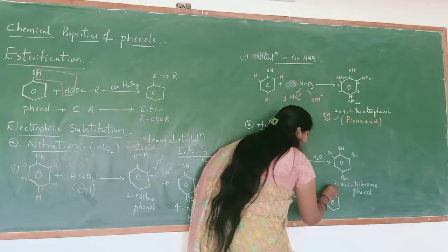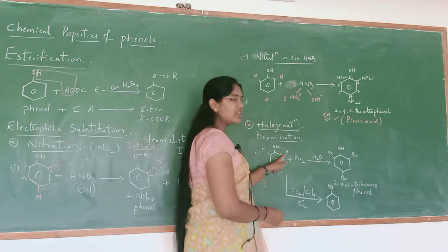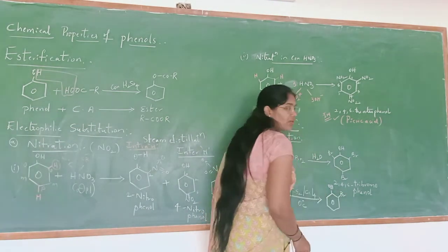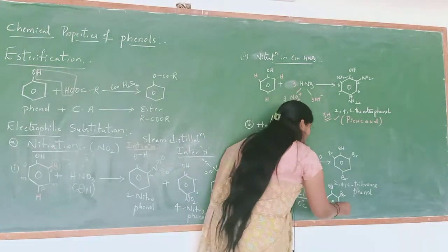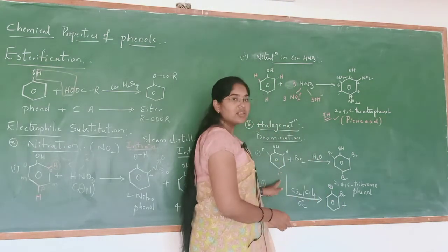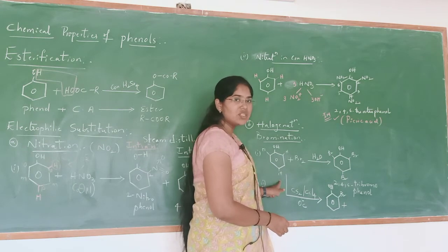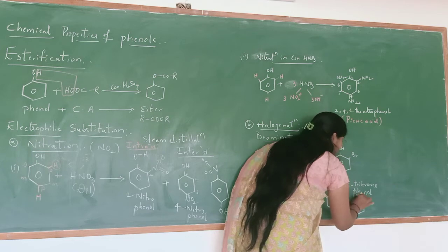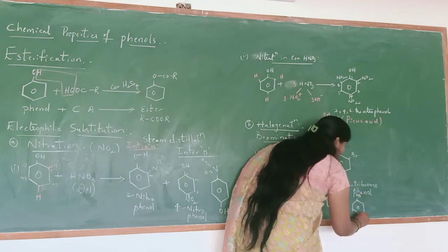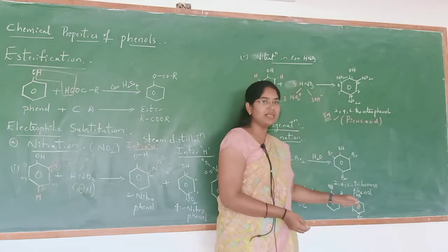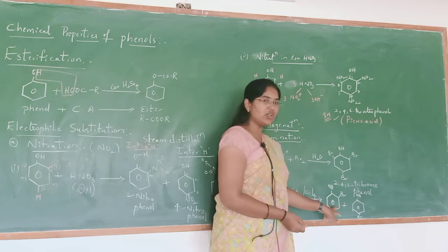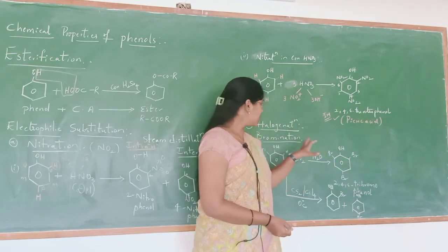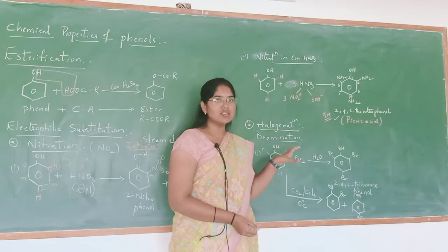In this second type of bromination, in the first case the hydrogen present at the ortho position is replaced by bromine. Then we will get 2-bromophenol. In the second case, the hydrogen present at the para position is replaced by bromine. Then we will get 4-bromophenol with bromine present at the fourth position. So here we got two compounds — 2-bromophenol and 4-bromophenol.